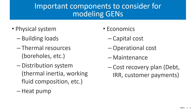A couple of components I'll talk through: on the physical system side, understanding your building loads — knowing when they're going to need heating and cooling throughout the year and how much — understanding your opportunities for thermal resources in an area, capturing the distribution system correctly, including whether you want a one pipe or two pipe system, how big the pipe is, how much thermal inertia is in the working fluid, and how well your heat pumps are going to perform with different entering temperatures.